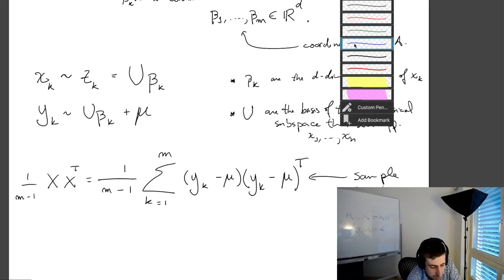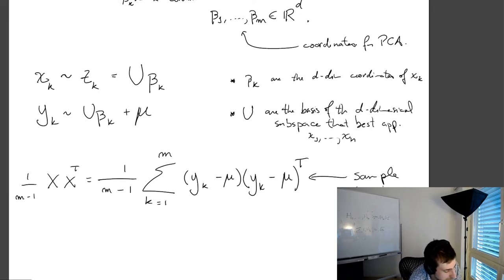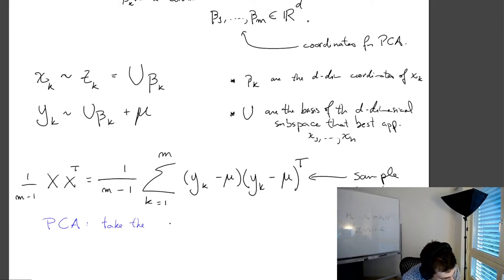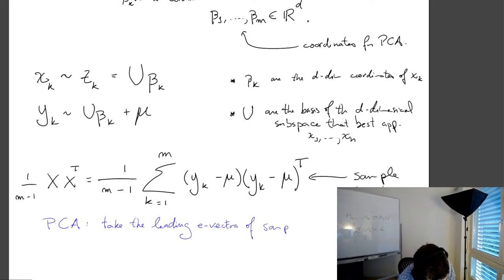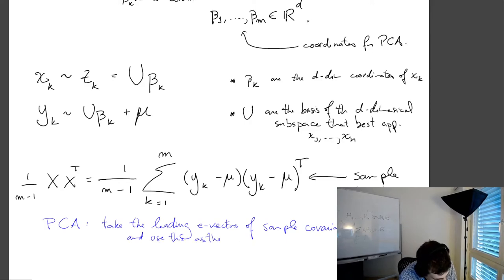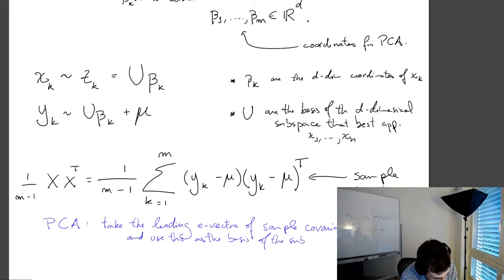Usually the way we see PCA is: take the leading eigenvectors of the sample covariance matrix, and use this as the basis on which to project the data — the basis of the subspace that approximates the data.